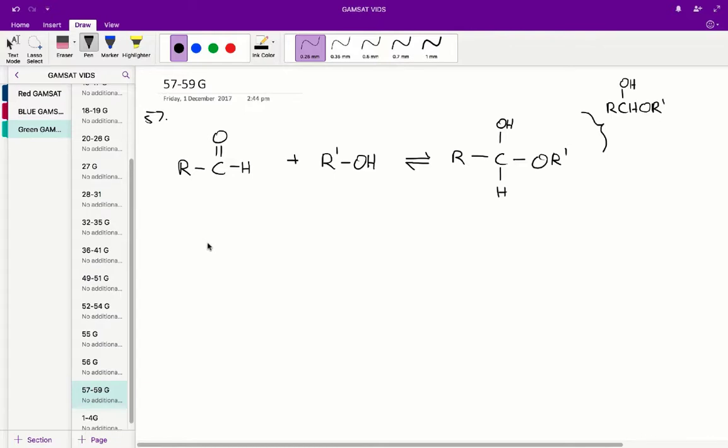Questions 57 to 59 in the ACER green paper. So the trick to answering question 57 is figuring out what the individual R values are.